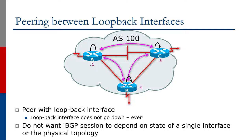When you configure IBGP, you should use loopback interfaces for both the source and destination address of each session. This is because the loopback address never changes, even if the topology of your network changes or physical interfaces go up and down. We want the IBGP sessions and the full mesh to remain up all the time, regardless of topology changes.